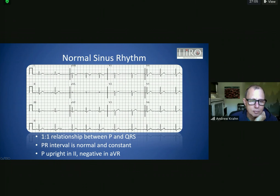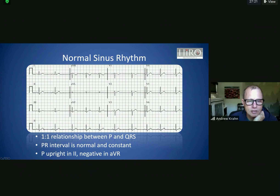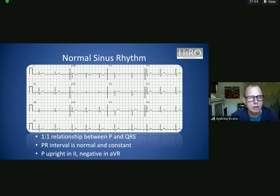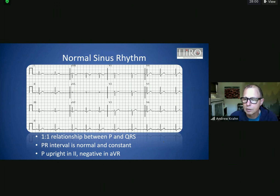A systematic approach to interpreting an ECG involves answering these questions: What is the rate? What is the rhythm? What is the axis — the net vector of the heart? What are the intervals? What are the characteristics of the waves and segments? And are there any odds and ends to note? This checklist approach allows disciplined ECG interpretation. Using this ECG as an example: the rate is about 60, the QRS complexes are about five boxes apart. The rhythm is sinus — a P wave precedes each QRS, with the P wave's vector and amplitude confirming sinus rhythm.